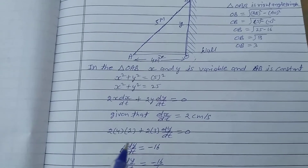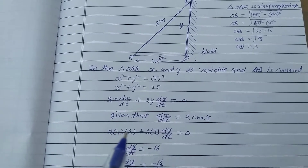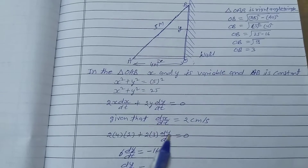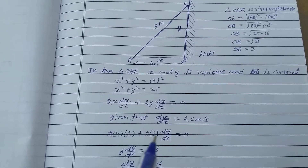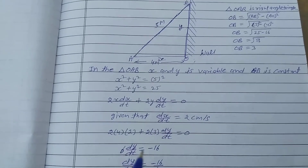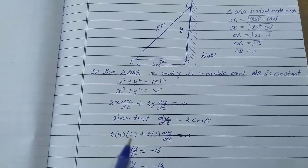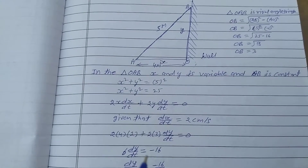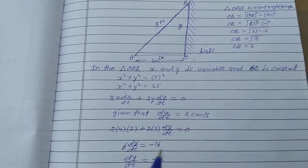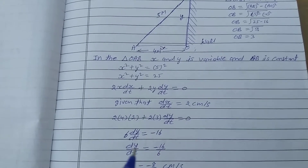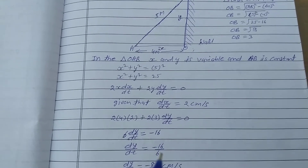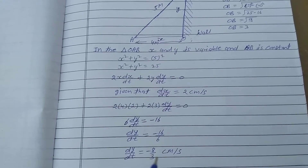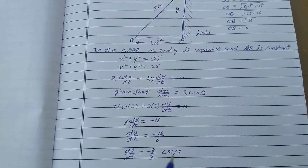Substituting into the equation: 2(4)(2) + 2(3)(dy/dt) = 0. That gives 16 + 6(dy/dt) = 0. Transferring 16 to the other side gives 6(dy/dt) = −16, so dy/dt = −16/6 = −8/3 cm per second.